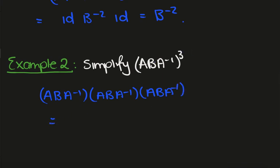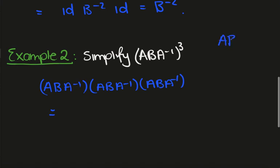We can't just say that it's A cubed B cubed A to the minus 3 because matrix multiplication is not commutative. A times B is in general not equal to B times A.